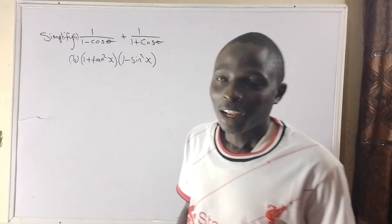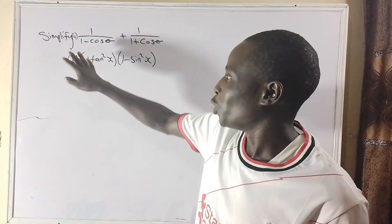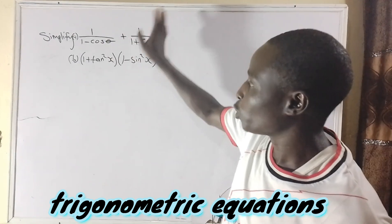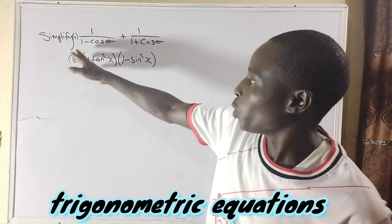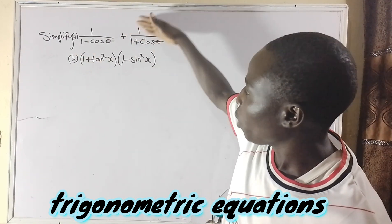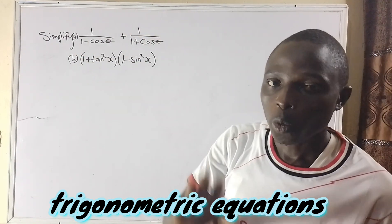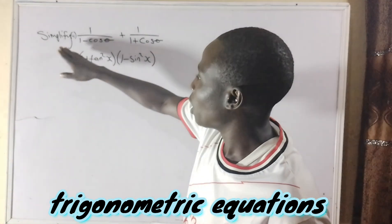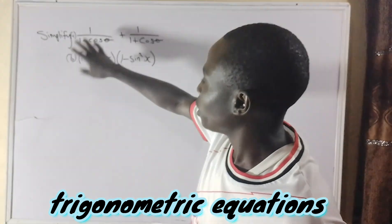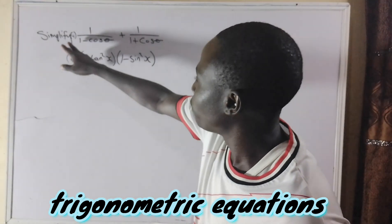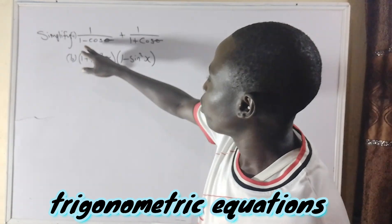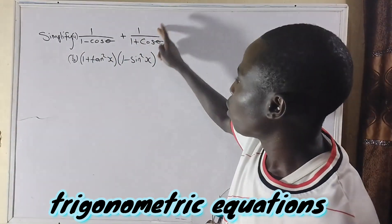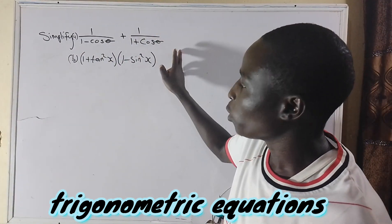Hello viewers, let's find a solution to simplification functions. We have two equations and we are going to solve them one after the other. The first question asks us to simplify 1 over 1 minus cos theta plus 1 over 1 plus cos theta.